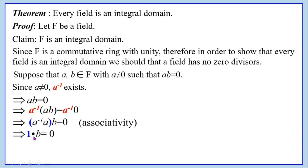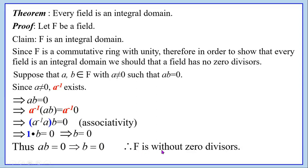The identity is 1. Hence 1·b = 0. Since 1 is the identity, this implies b = 0. Thus, a·b = 0 implies b = 0. Therefore, f is without zero divisors in this case. Here we assumed a ≠ 0; ab = 0 implies b = 0. In the next case, we will assume b ≠ 0 and show ab = 0 implies a = 0.